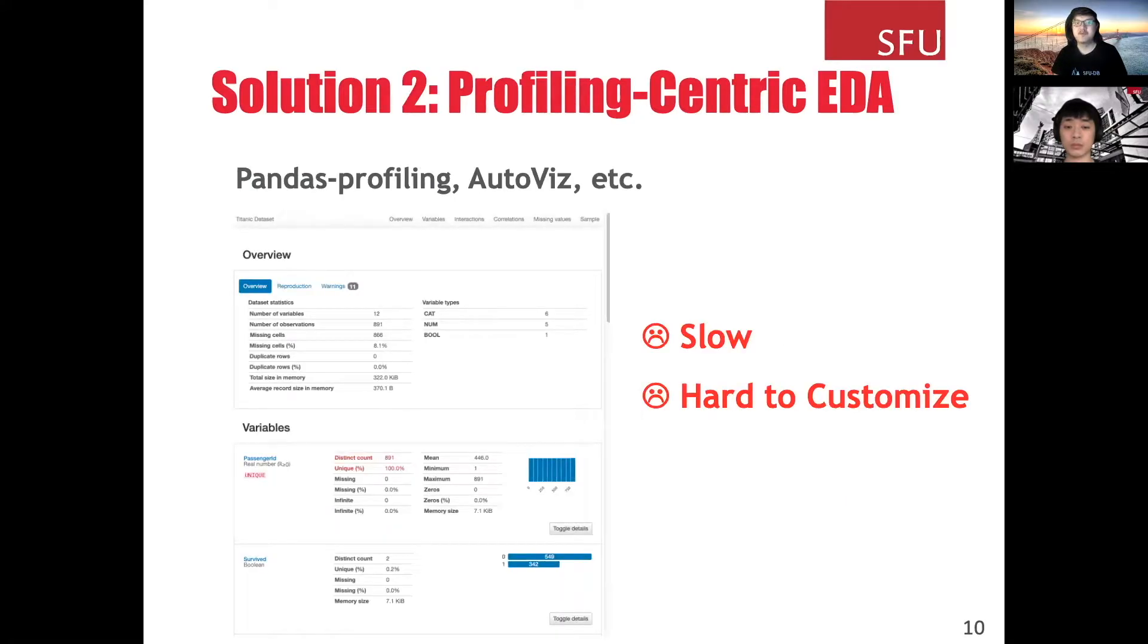The second solution is profiling-centric EDA. That is, using data profiling tools such as Pandas Profiling or AutoViz to generate a report. These tools will provide a very high-level API and allow you to create a report with one line of code. However, the profiling-centric approach is slow. This is because it computes visualizations for the full data, including distribution for each column, correlation metrics, and the distribution of missing values. This is not necessary when you are only interested in part of the data, for example in some columns, or you are only interested in some visualizations such as missing values. Furthermore, since the report contains many visualizations, it's also hard to customize.